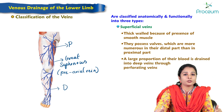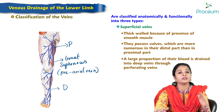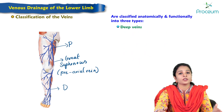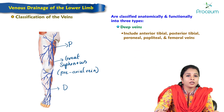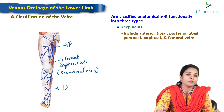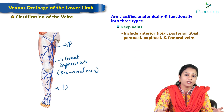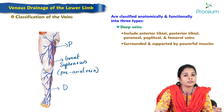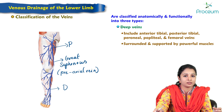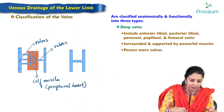A large proportion of blood from the superficial veins is drained into the deep veins, which include the anterior tibial, posterior tibial, peroneal, popliteal, and femoral veins. These deep veins are surrounded and supported by powerful muscles and possess more valves.